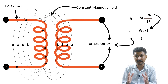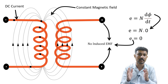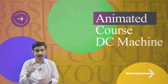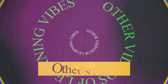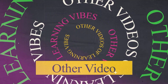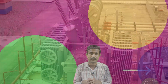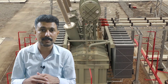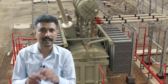So now it is clear why a transformer works with only AC and not DC. In spite of knowing all these things, if you still want to give DC supply to a transformer, what will happen to that transformer? Let's explore that.